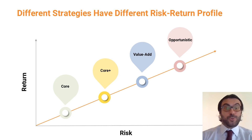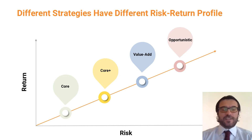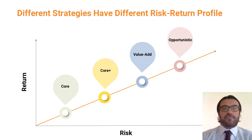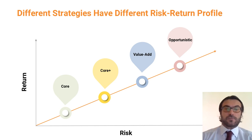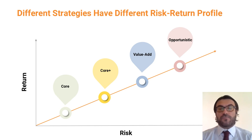The experience has been that leverage is actually the single most important factor determining risk. Typically, investors who lose money in real estate are investors who borrow too much. To be defined as core, the leverage should be either zero or very, very low — I would say 10-15% maximum. In the core plus space, we could see the use of maybe 25-30% of leverage. The moment we go beyond that, we really enter into the value-add space, and the same with opportunistic.